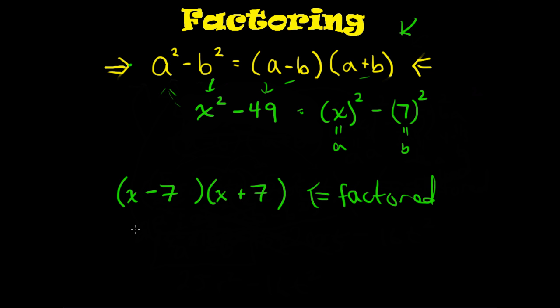If you're really diligent about your work and thorough, you can even check it from here. So you distribute back through, you get x squared plus 7x, second term, minus 7x, minus 49. And once again, the middle terms cancel, and you're left with x squared minus 49, the difference of two squares.